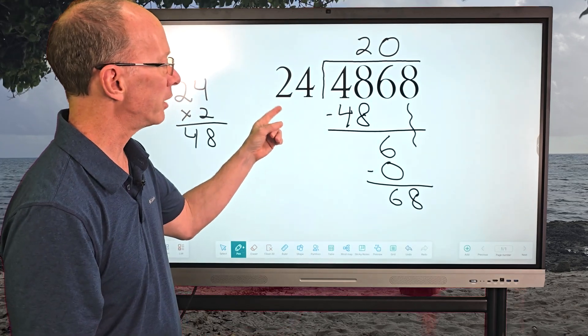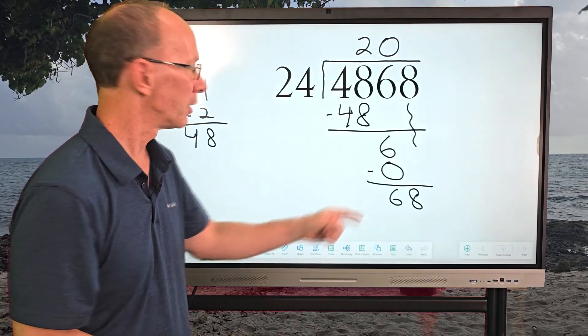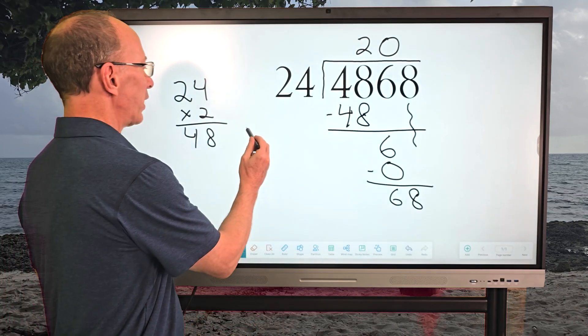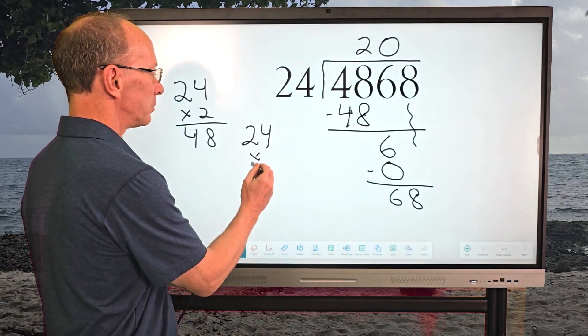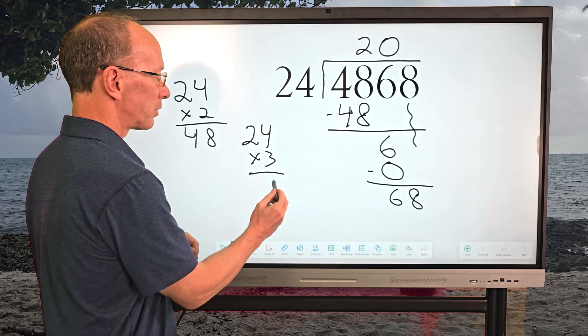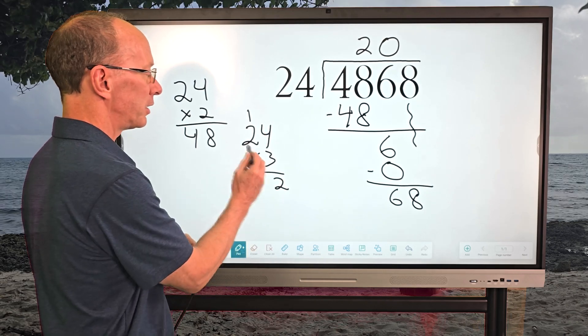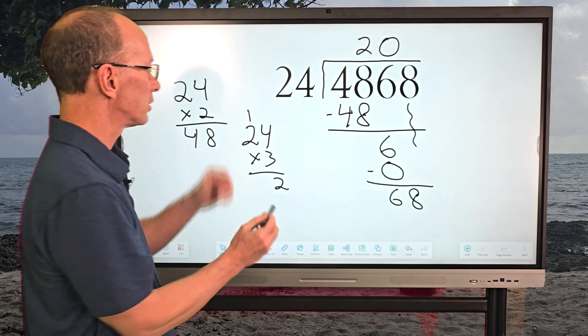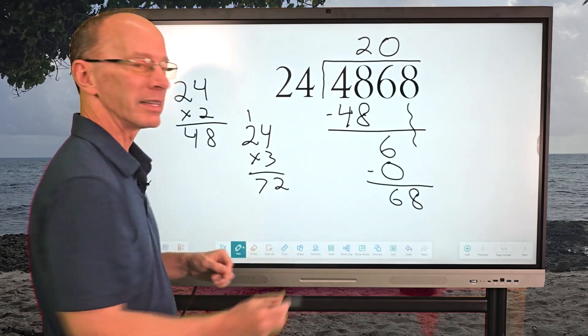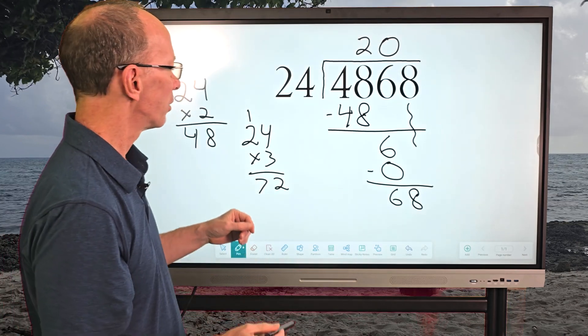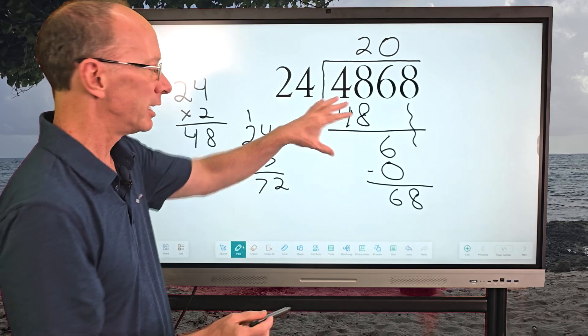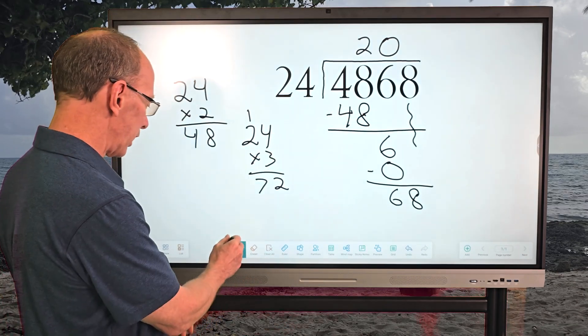How many times can I put 24 into 68? Looks like 48 right now. If I did 24 times 3, so 4 times 3 would be 12, carry the 1, and then 3 times 2 is 6 plus the 1, which would be 72. That's too much. So I'm going to just use 2. I need to make this problem just a little bit smaller, I'm running out of screen here.